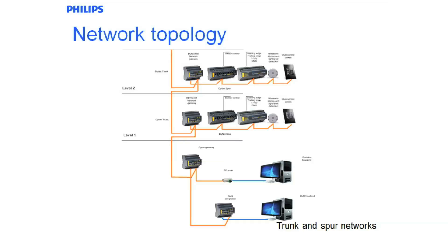This shows a trunk and spur type topology using a Philips Dinette DDNG-485 network gateway. These devices have two Dinette ports on them. Either port can be configured to be Dinette 1 or Dinette 2. Typically the spurs are run out of one port and the trunk is run down port 2, which runs down the riser.